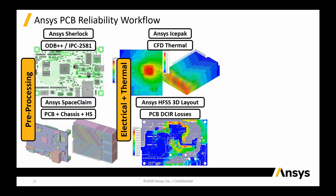That heat load is fed into IcePack as part of a CFD thermal solution that can include other sources of heat dissipation, fans, heat sinks, and the effect of the environmental conditions. Since the DCIR losses are temperature dependent, we can loop back and forth between IcePack and 3D layout until we get converged temperature fields and power maps.